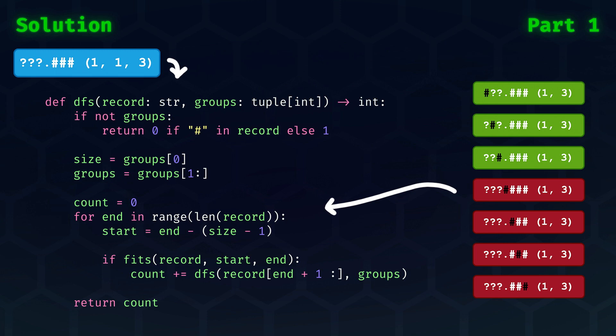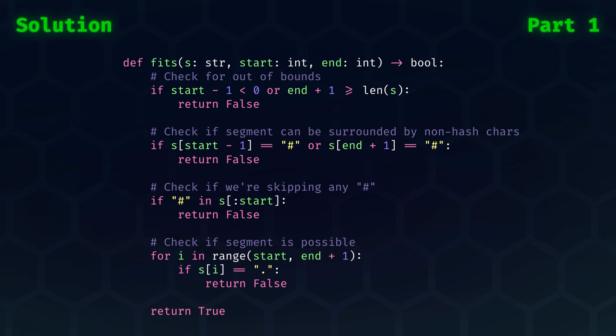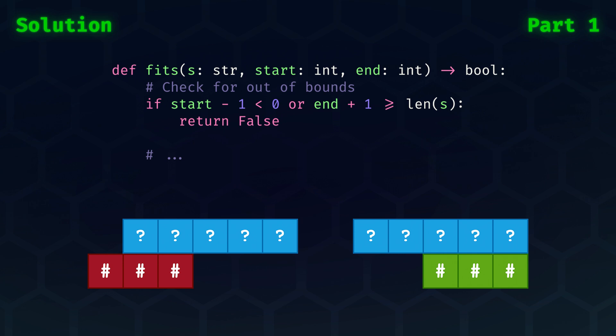Key to this algorithm is to see if a group or segment fits in the record. This function looks as follows and has a few cases to check. Let's tackle them individually. Firstly, given the blue record, we need to check if a segment is within the bounds of the record. So we check the start and end positions.